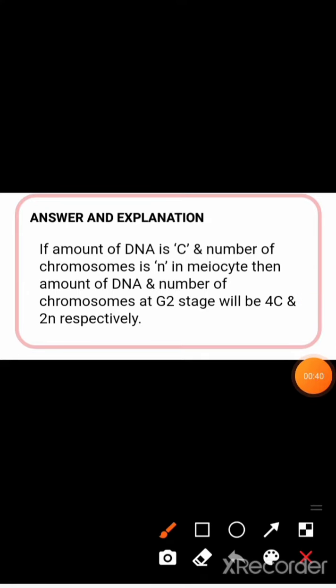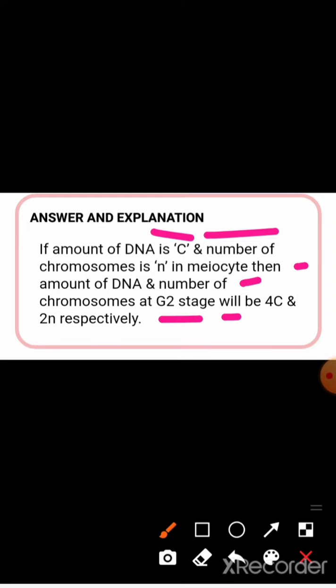If the amount of DNA is C and the number of chromosomes is N in a gamete, then the amount of DNA and number of chromosomes at the G2 stage will be 4C and 2N respectively.